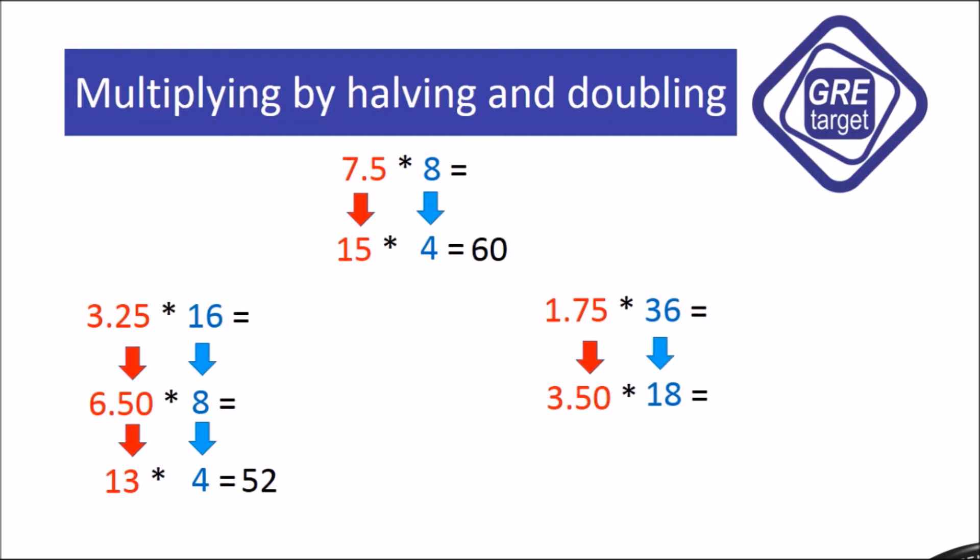One more step we have to go so that we can get the answer easily. We are doubling 3.50, so we get 7. We halve 18, so we get 9. We know that 7 nines are 63.